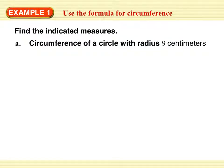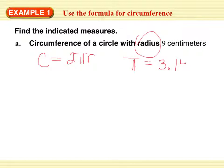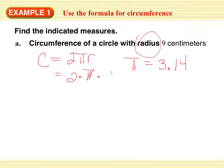Find the indicated measure. Give me the circumference of a circle with a radius of 9 centimeters. Since we have the radius, we're going to use 2 pi R. Pi is a button on your calculator — or if you want to round it, it's 3.14. So 2 times pi times the radius, which is 9 centimeters. If you tap that out on your calculator, you get 56.55 centimeters.